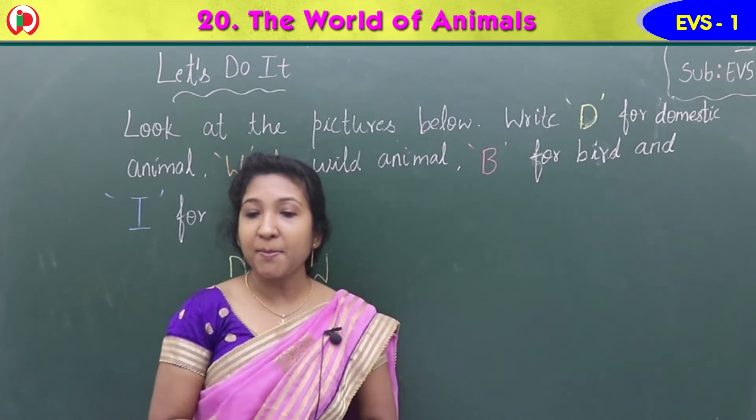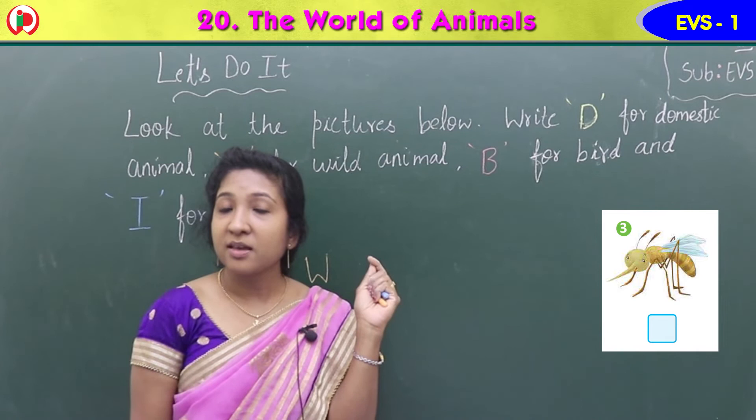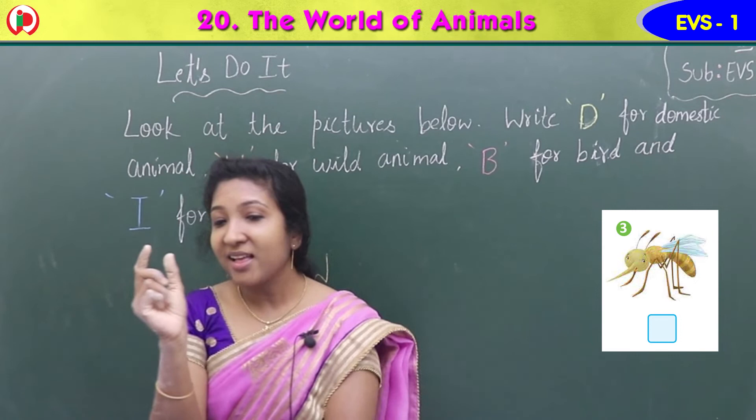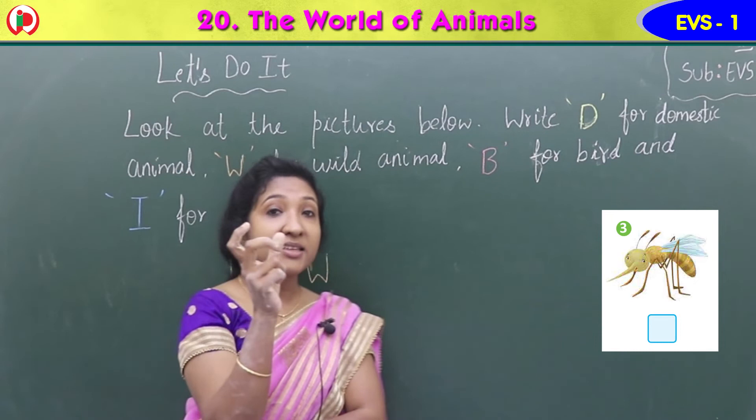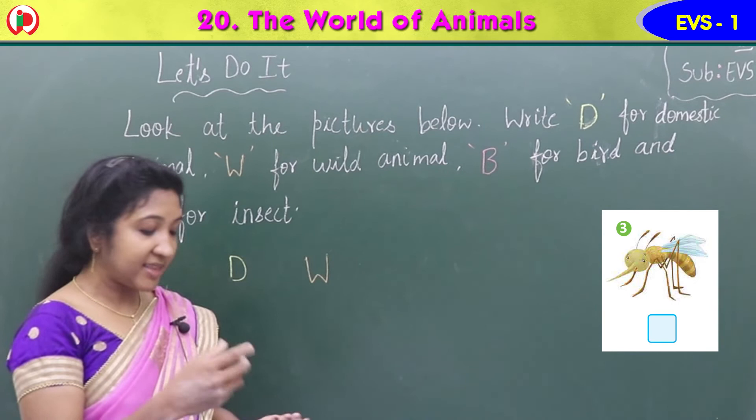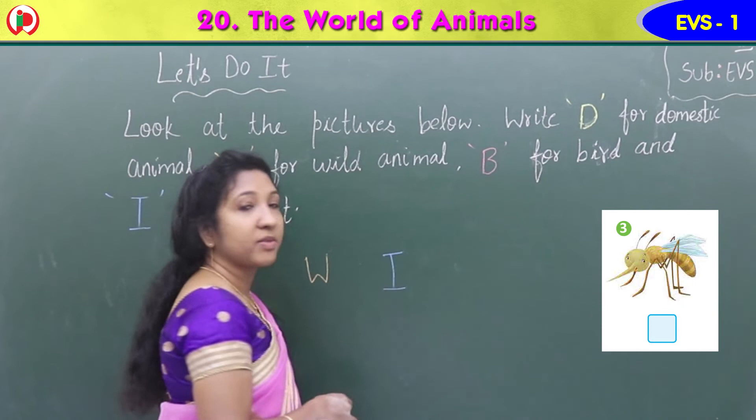Coming to the third image — which image can you see here? It is a small insect. It is an ant. Because it is an insect, you have to write I. I is the first letter of insect.